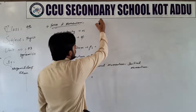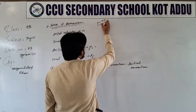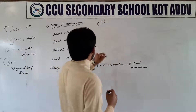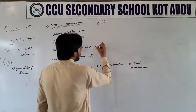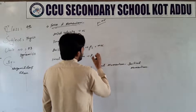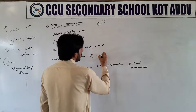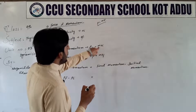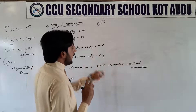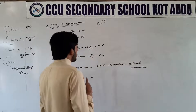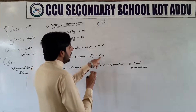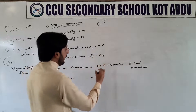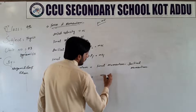P is equal to mv — ham ne padha hua hai. Momentum ka formula hota hai: the product of mass and velocity is called momentum. Pi hai to hamare paas kya ho jae ga? mvi. Pf hai to hamare paas kya ho jae ga? mvf. mv to wahi momentum hai — i initial momentum, aur f humare paas final momentum represent kara hai. Toh yahan par pf ki value mvf hai, uski jagah par mvf lete hain, minus ka sign hai, aur initial momentum pi is equal to mvi — uski value put kar dete hain: mvi. Yaani pf minus pi is equal to mvf minus mvi.